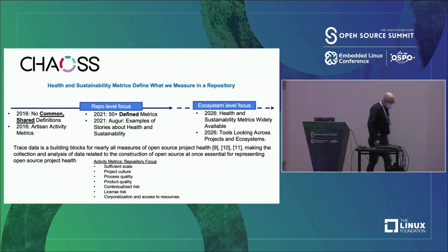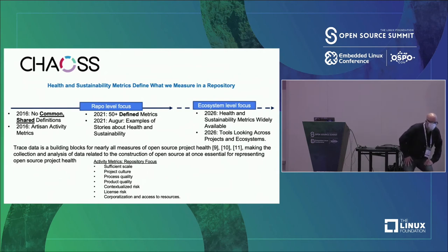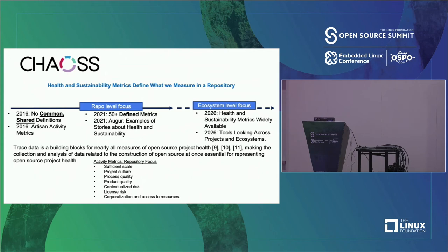Coming back to CHAOSS: we have two metrics formally released and have defined about eight minimum viable metrics. Our history is that in 2016-17 we didn't have common shared metrics — every organization measuring open-source software was doing it their own way. Now we have over 50 defined metrics, and when our next release comes out it'll be over 75. With risk and dependency metrics, we're trying to make health and sustainability metrics widely available. Activity metrics with a repository focus can give us a really good idea about scale, project culture, quality, process quality, and product quality. We can contextualize risk, identify licensing risk, and look at corporatization and resource access as factors.